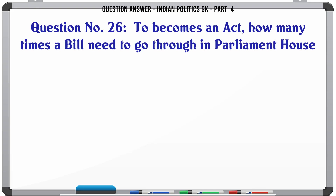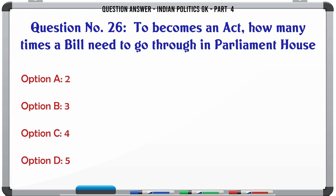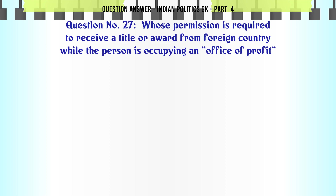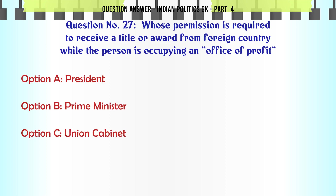To become an Act, how many times does a Bill need to go through in Parliament? A. 2. B. 3. C. 4. D. 5. The correct answer is 3.